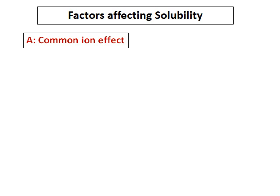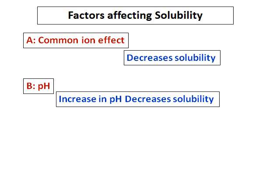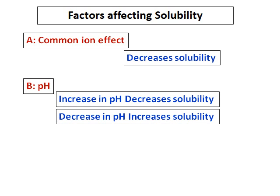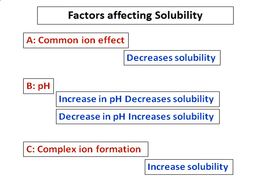We are going to learn about factors that affect solubility. The first one is the common ion effect, which decreases solubility. The second is pH — an increase in pH decreases solubility, and a decrease in pH increases solubility. The third is complex ion formation, in which solubility increases.